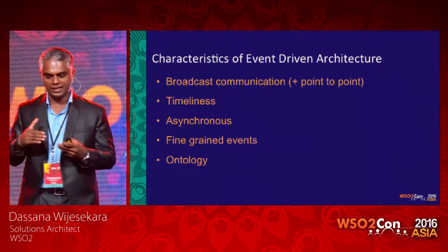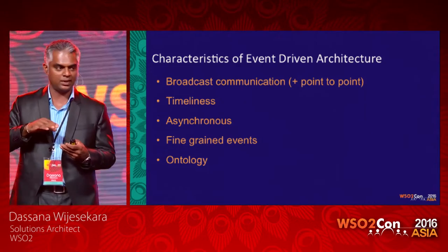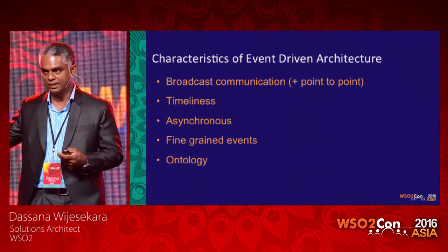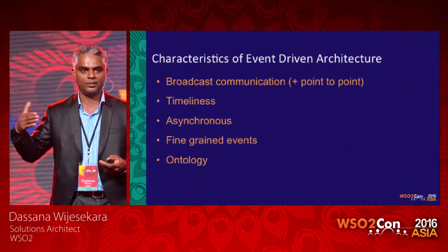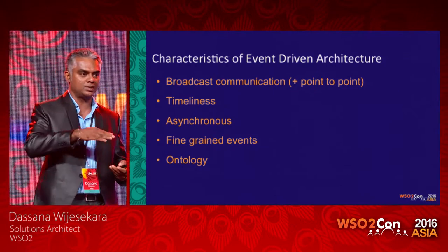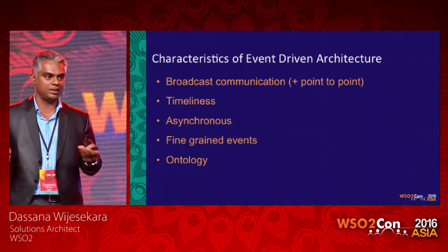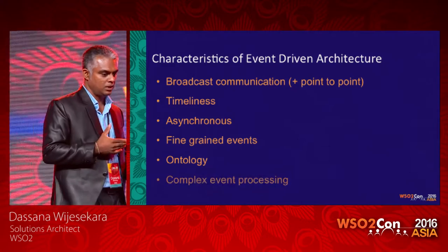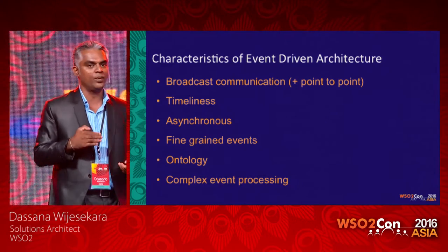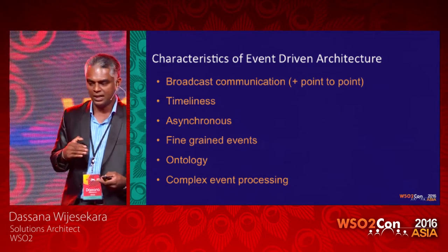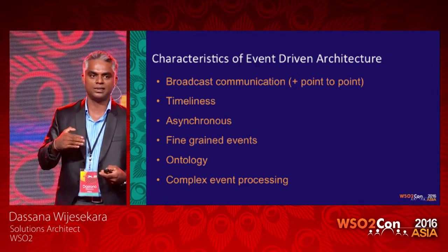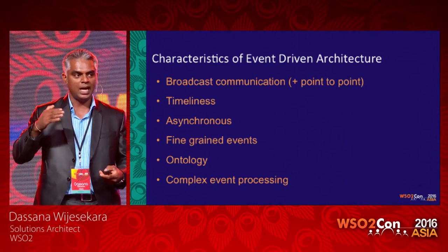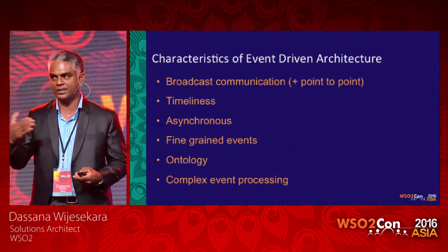Events are fine-grained and contain a minimum amount of information. The lighter the event, the more capable the system is of handling real-time traffic. Events have ontology — a standard minimum definition that different systems can understand, since events will pass through different systems. And the most important characteristic is complex event processing, which looks at events, provides information, and converts that information into wisdom.